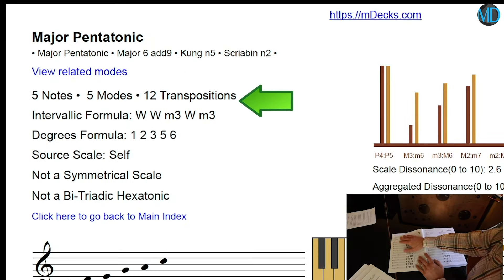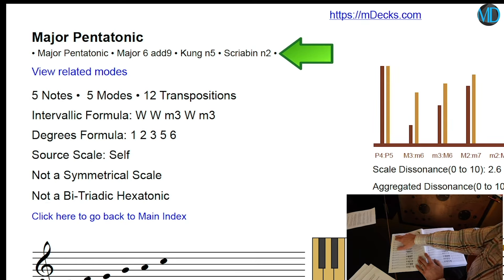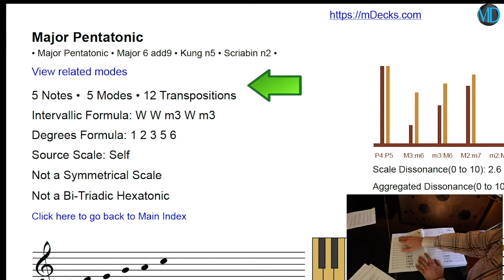The top card shows you properties of the scale and also appear other names that this scale might go by. So, we have major pentatonic, or major six add nine, or kung natural five, or scrab end natural two. A lot of the other information in the card we noticed on the other page, like for example, here, five notes, five modes, and twelve transpositions. But we also have some extra information here about the scale.